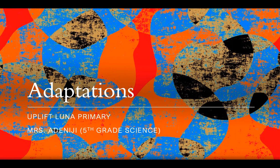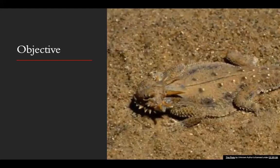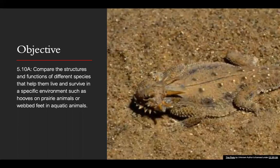Remember, this week we are learning more about adaptations. So our objective for this week is 5.10A: compare the structures and functions of different species that help them live and survive in a specific environment, such as hooves on prairie animals, or webbed feet in aquatic animals.